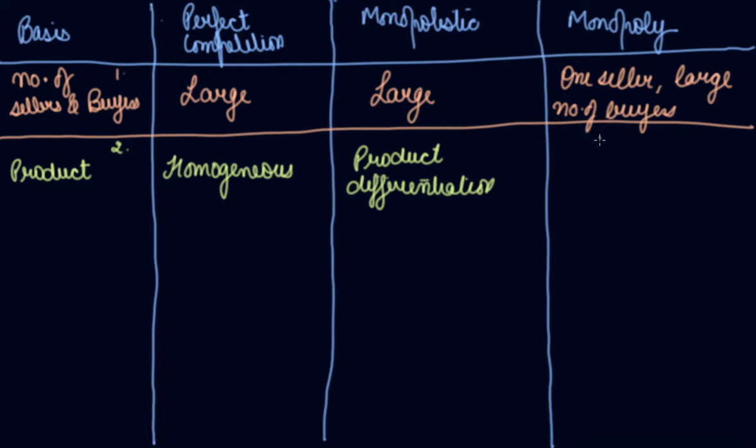In monopoly, homogeneous or differentiated product. We took the example of Indian Railways—they offer general class, first AC, second AC, third AC, and different trains with different speeds and travel times. So they have both homogeneous or differentiated products in monopoly.